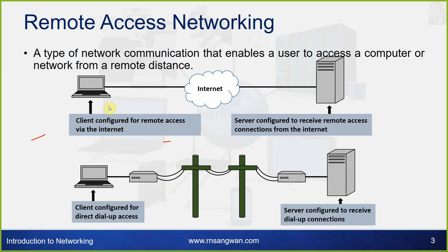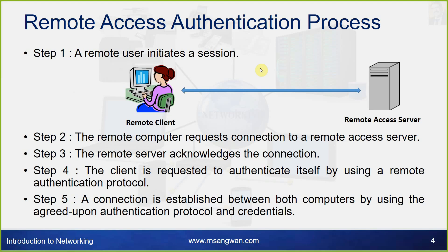This is the machine which you want to access, configured to receive remote access connections from the internet. The client is configured for remote access via internet. The client can configure for direct dial-up access through a modem, then telephone cables, then demodulation, and then server access. This is the remote access of resources networking.